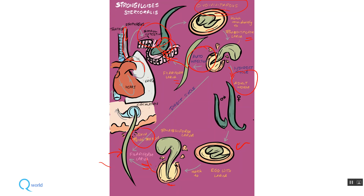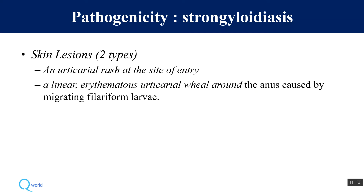There are three cycles: direct, indirect, and auto-infection. In auto-infection, the rhabditiform larva converts into filariform larvae which enter the intestinal mucosa and become adult worms again. In the direct cycle, they go to the environment, become filariform, and penetrate the skin. In the indirect cycle, free-living adult worms develop in the environment, lay eggs, produce rhabditiform larvae, which again become filariform larvae.